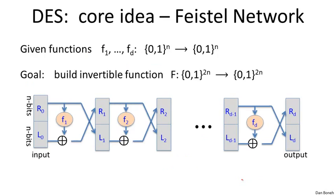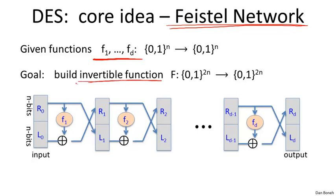The core idea behind DES is what's called a Feistel network, due to Horst Feistel. It's a clever idea for building a block cipher out of arbitrary functions f1 to fd that map n bits to n bits. These are arbitrary functions — they don't have to be invertible. What we want to do is build an invertible function out of those d functions, specifically a new function F that maps 2n bits to 2n bits.